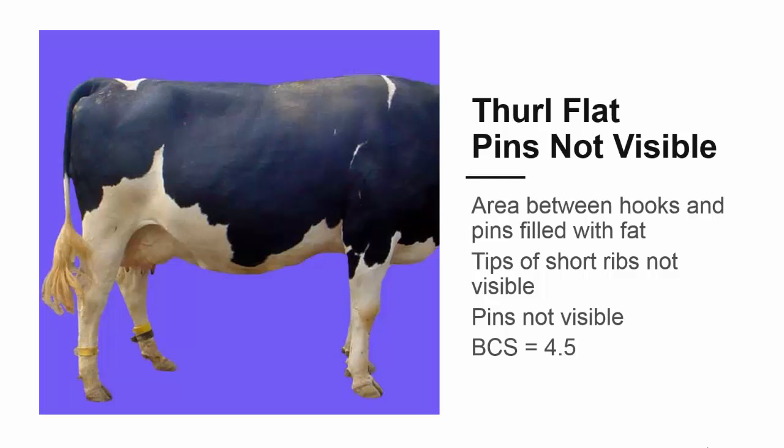As fat continues to accumulate, the tips of the short ribs can no longer be seen as individual bones, and the pins are no longer visible. Such a cow scores 4.5.